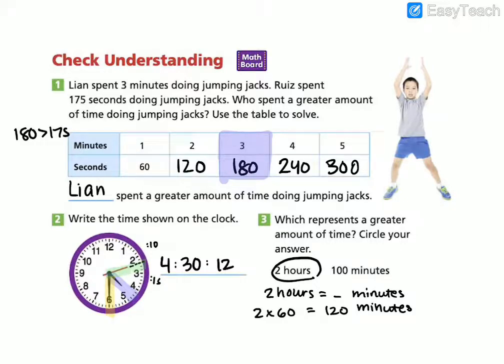And for number 3, we found that 2 hours equaled 120 minutes. We could have looked back at our chart. I multiplied 2 hours by 60 minutes in an hour. So 2 hours is greater than 100 minutes.